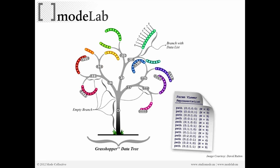Here's the representation of a data tree from the Grasshopper primer. You can see how the tree representation works: as we develop our file and define new relationships resulting in new geometries or bits of data, our tree grows. At the end of every branch we have leaves, which are our data elements — numbers, points, geometry, et cetera.